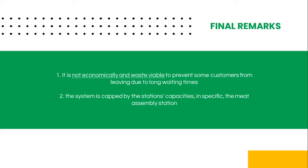We are now going to present some final remarks. After our simulation study, we concluded that it isn't economically or waste-viable to speed up the food production assembly processes with the purpose of preventing customers from leaving due to long waiting times. Having larger stocks in order to serve all customers is less profitable and leads to significant waste. The system is bottlenecked by the station capacities, in particular the meat assembly station.